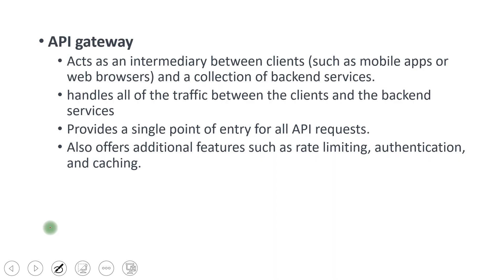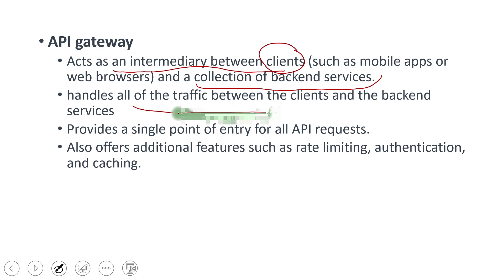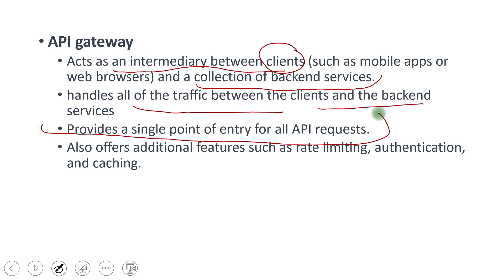API gateway acts as an intermediary between clients and a collection of backend services. It handles all of the traffic between the clients and the backend services. It provides a single entry point for all API requests, and it also offers additional features such as rate limiting, authentication, and caching. We can also put logging on the API gateway since it is the single entry point to our backend services.